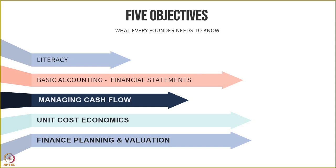Let me walk you through the five objectives I've laid down for these modules. The first is around the literacy that every founder needs to have about the terms in finance — being able to read and talk with a financial accountant, financial analyst, or even an investor. The second objective is the basics of accounting, the whole accounting cycle, to the point of financial statement preparation. The third objective is to actually manage cash flow, which is a must-have for startups.